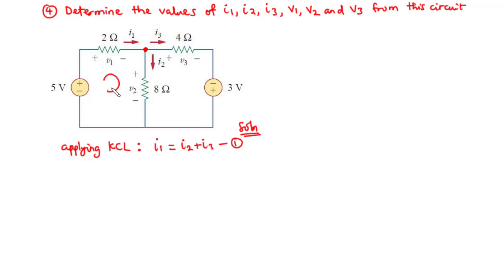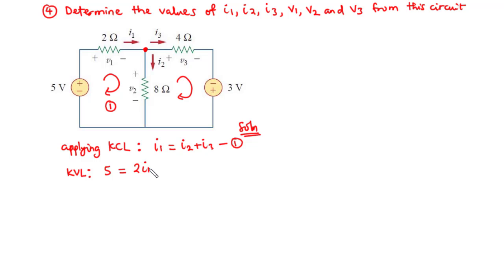Next we apply KVL to the loops. For the first loop, moving in the clockwise direction, the algebraic sum of all voltages across the loop should be zero. We have 5 volts, so 5 equals the current flowing through the 2 ohms, which is I1, giving 2I1, plus the current through the 8 ohms which is I2 — also in line with the direction — giving plus 8I2. Let's call this equation 2.